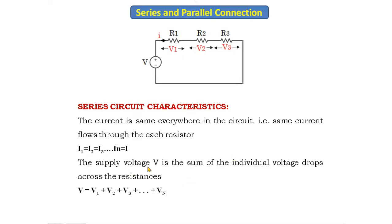The supply voltage V is the sum of the individual voltage drops across the resistances. The current is same, but the voltage divides in series connection. As there are three resistors, the voltage divides into three parts: V1, V2, V3. So we write V = V1 + V2 + V3. If there are n resistors: V = V1 + V2 + V3 + ... + Vn. This is about the series connection characteristics — when three resistors are connected in series, R_total = R1 + R2 + R3.